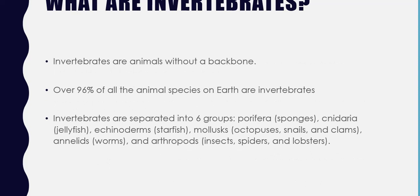So what are invertebrates? They are animals without a backbone. An interesting fact is that over 96% of all the animal species on Earth are actually invertebrates. But the ones that we think of most — the most common ones we think of when we think of animals — are actually vertebrates, even though there are a lot less of them. So most of the animals that live on Earth are invertebrates.